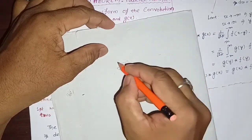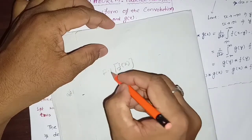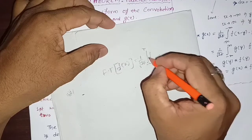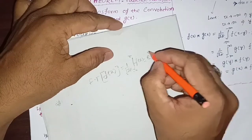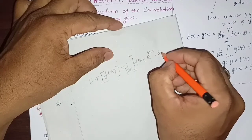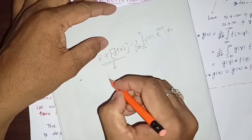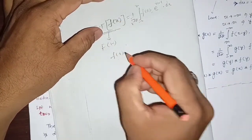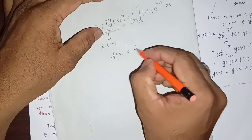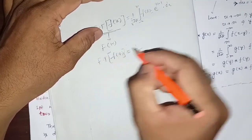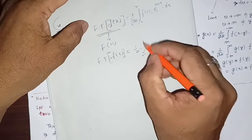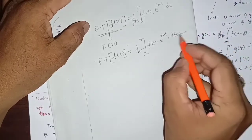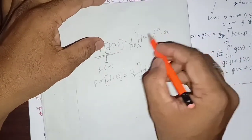We know that if we have a function f(x), the Fourier transform applied over it will be written as (1/√(2π)) times the integral from minus infinity to plus infinity of f(x)·e^(iωx) dx, written in short as capital F(ω). Likewise, for f(t), it will be (1/√(2π)) ∫ f(t)·e^(iωt) dt.